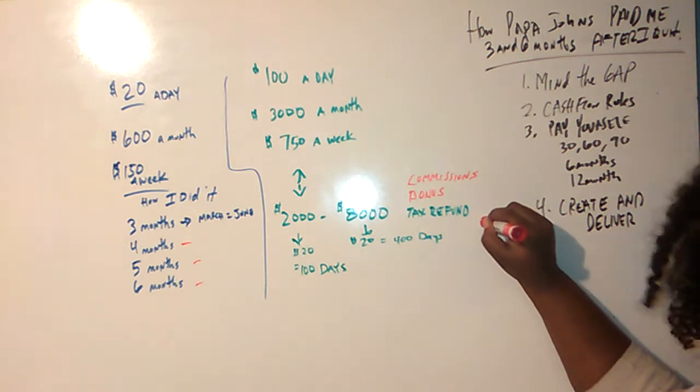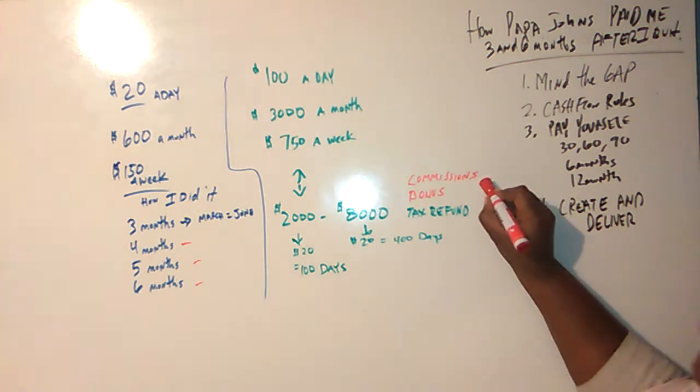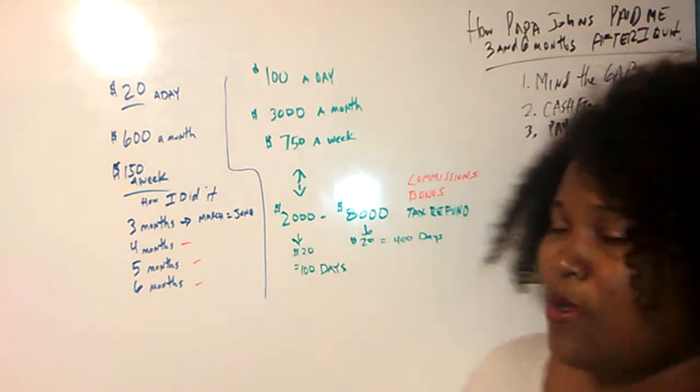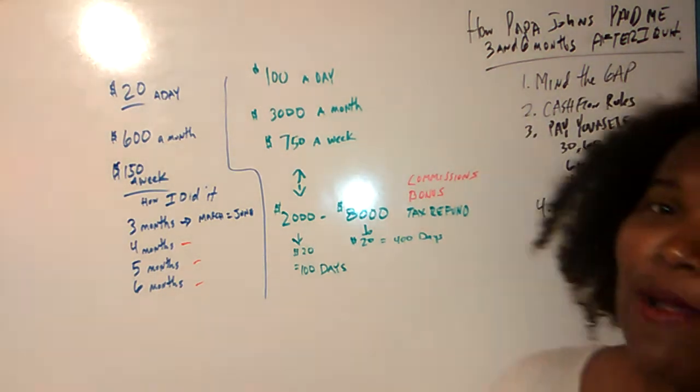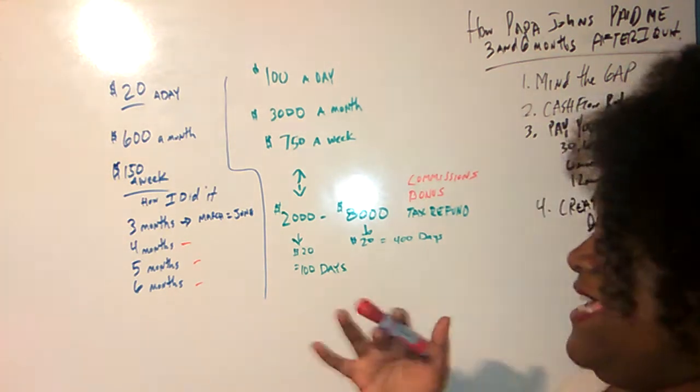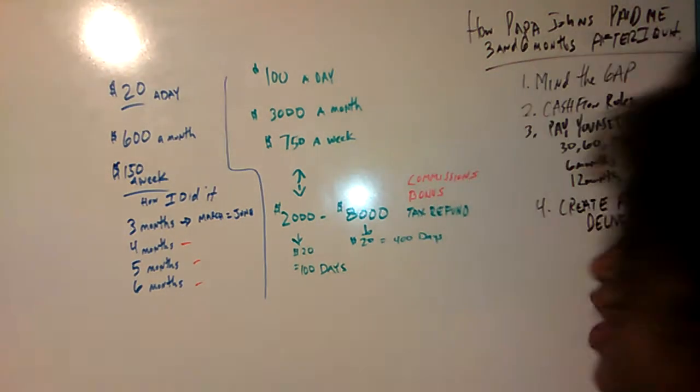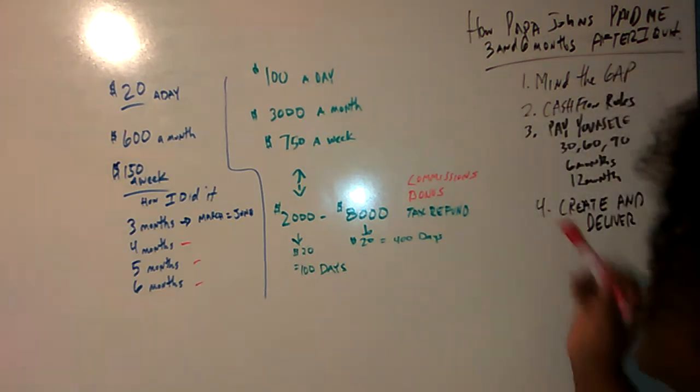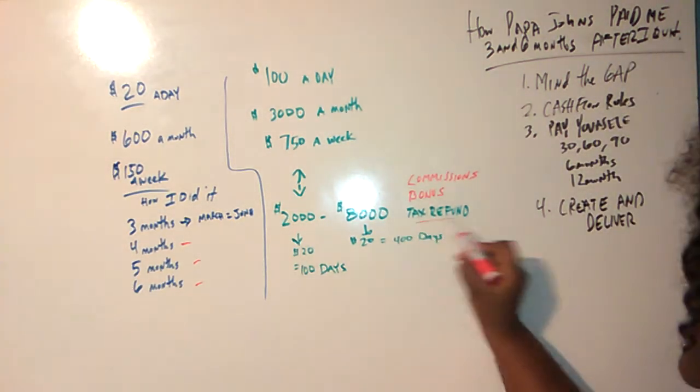What I tell people to do is use your tax refund, use your bonus, use your commission. Real estate people, sales people, every time you make a big sale, don't go out there getting crazy. Pay your rent up first, man. Pay that thing up six months if you can because you need an apartment or your house.